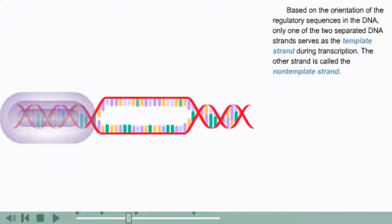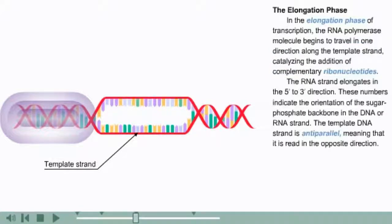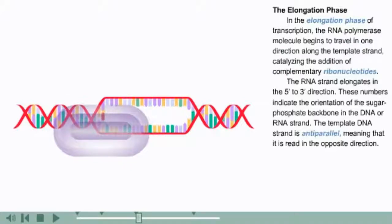separated DNA strands serves as the template strand during transcription. The other strand is called the non-template strand. In the elongation phase of transcription, the RNA polymerase molecule begins to travel in one direction along the template strand, catalyzing